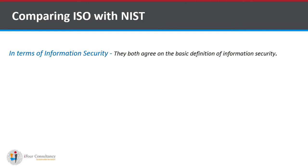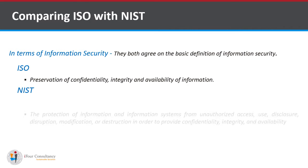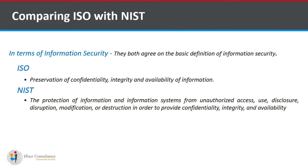In terms of information security, both ISO and NIST agree on the basic definition. ISO defines information security as the preservation of confidentiality, integrity, and availability of information. NIST defines information security as the protection of information and information systems from unauthorized access, use, disclosure, disruption, modification, or destruction, in order to provide confidentiality, integrity, and availability.